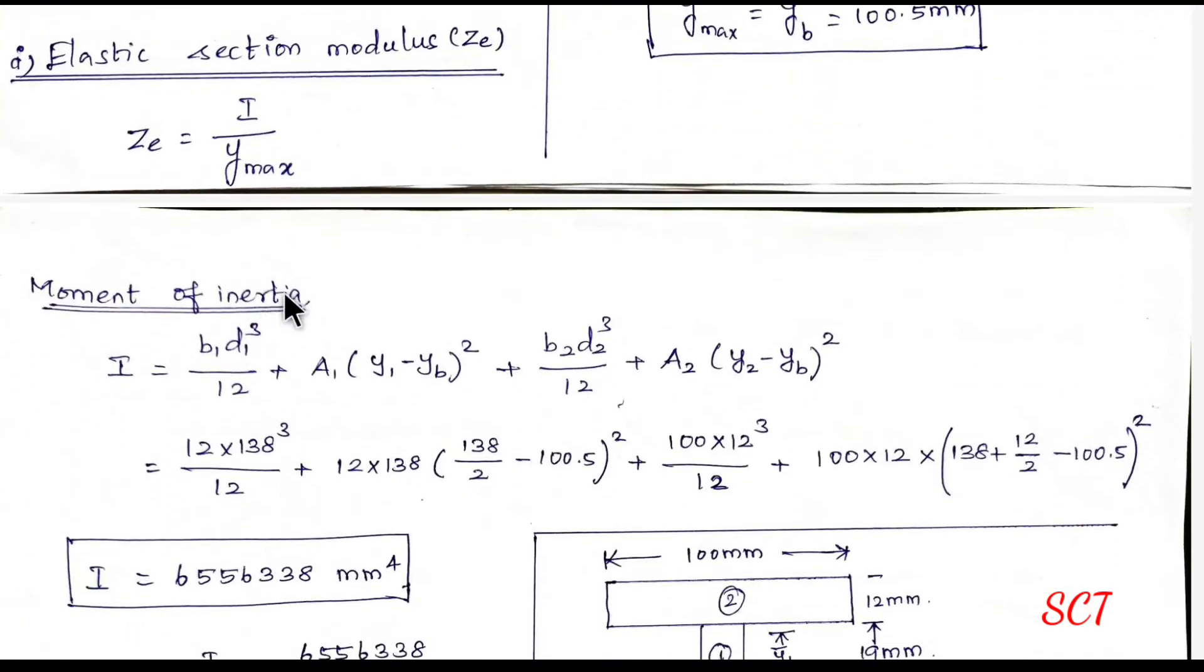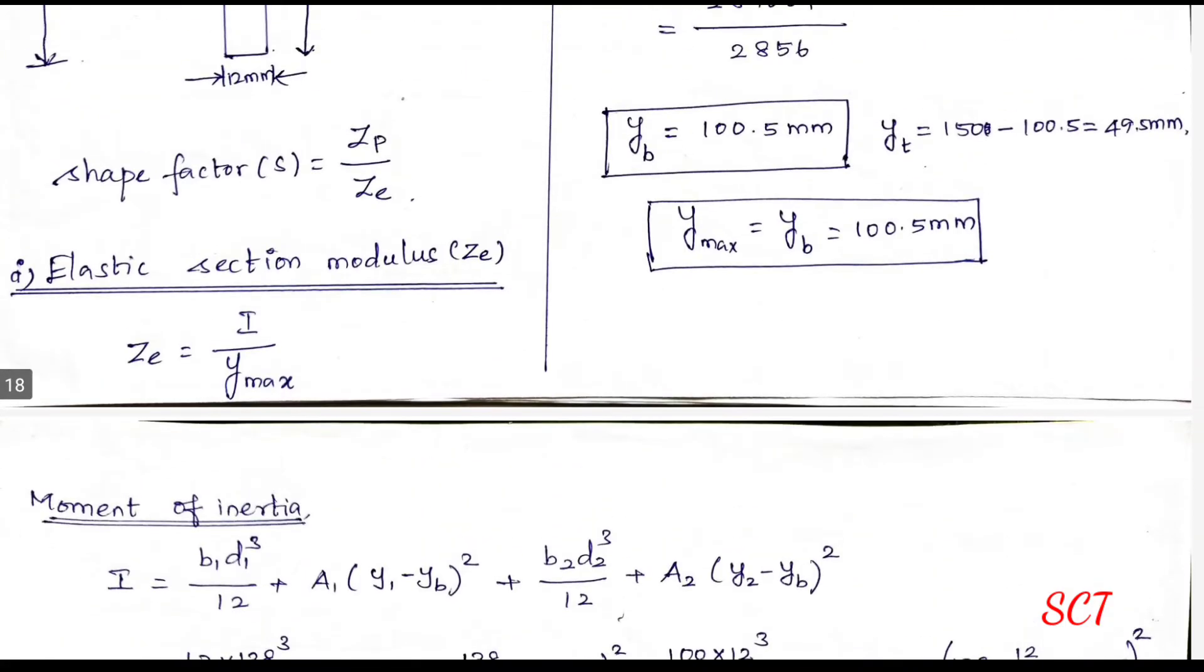we calculate the moment of inertia. I will calculate the formula. If we calculate the formula, B1 D1 cube divided by 12 plus A1 Y1 minus YB bar square. Plus B2 D2 cube divided by 12 plus A2 Y2 minus YB square. This is the T section. We calculate the other two points.